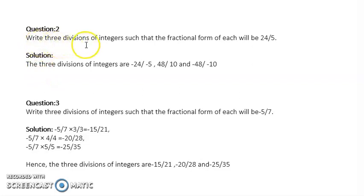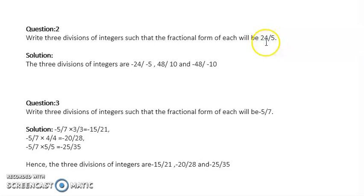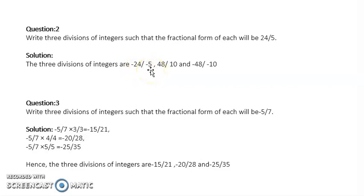Write 3 divisions of integers such that the fractional form of each will be 24 upon 5. We have to write 3 fractional forms where the answer should be 24 upon 5 along with the signs. Both numerator and denominator have a positive sign. So the first division of integers is negative 24 upon negative 5. If I simplify this, the two negative signs cancel, giving positive 24 upon positive 5. So this is one.